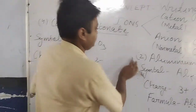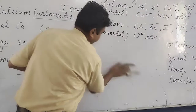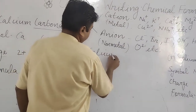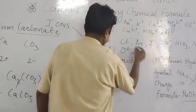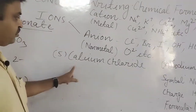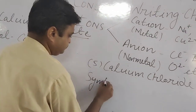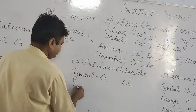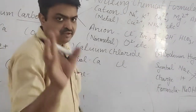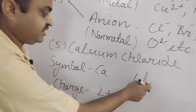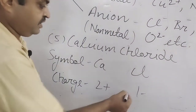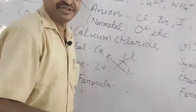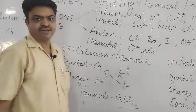The fifth formula is calcium chloride. Write the symbol: calcium is Ca and chloride is Cl. The charge of calcium is 2 and the charge of chloride is 1. You interchange the charges and the formula that you get is CaCl₂. That is the formula of calcium chloride.